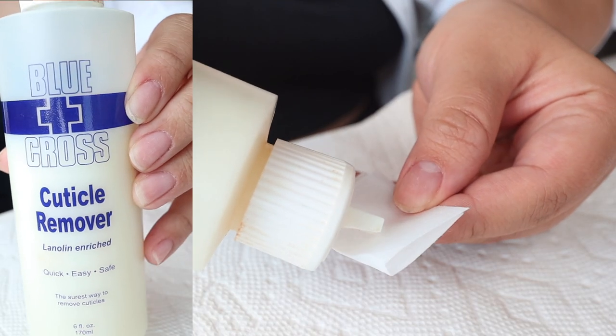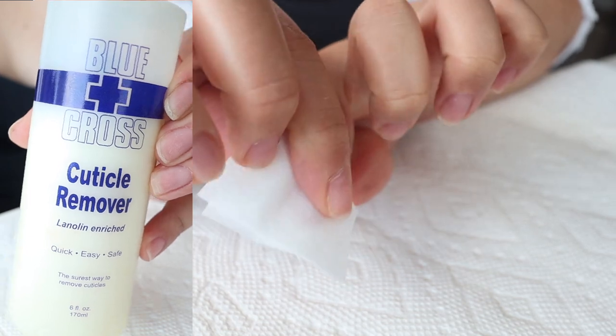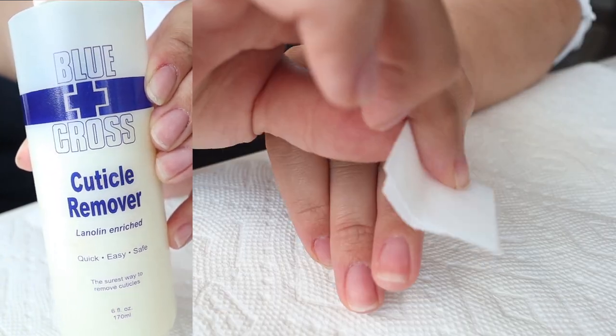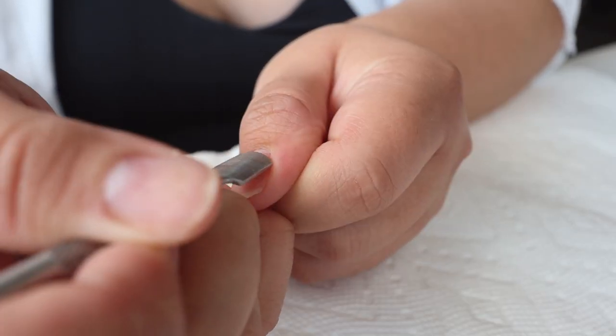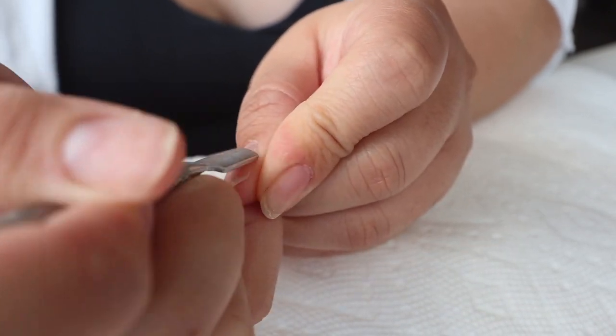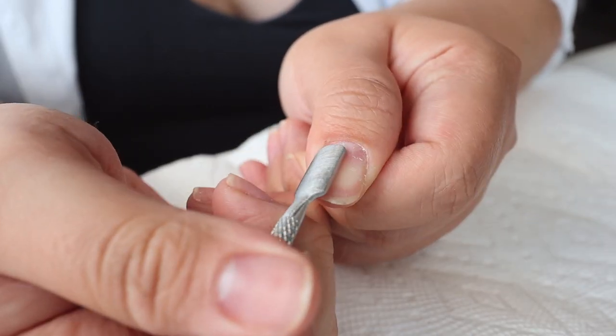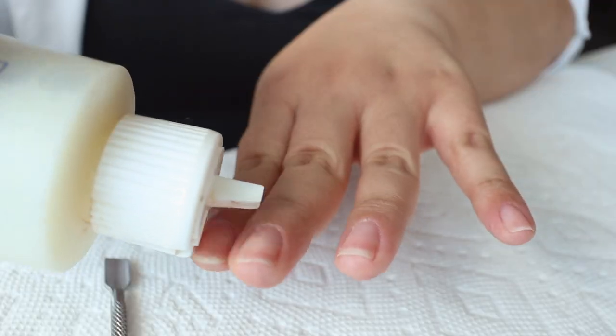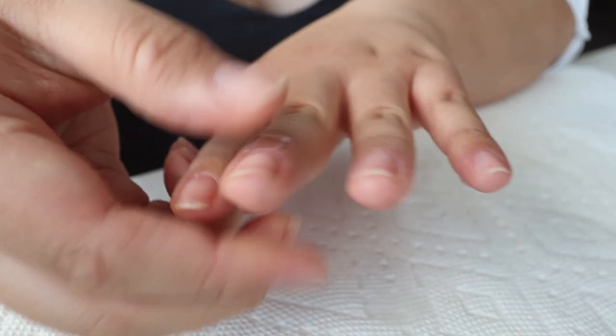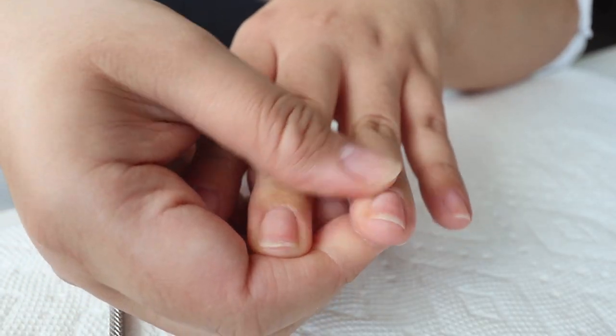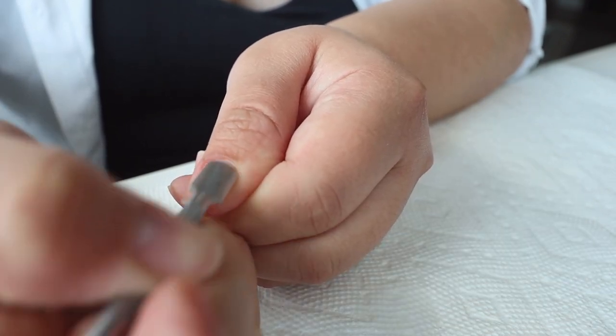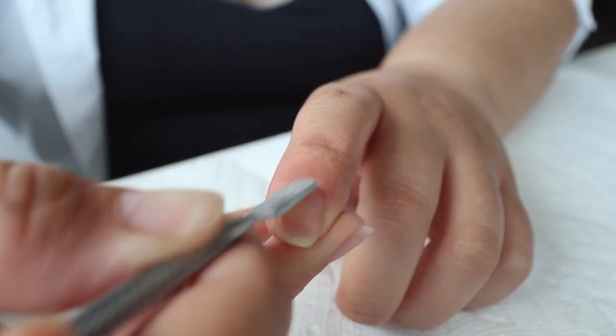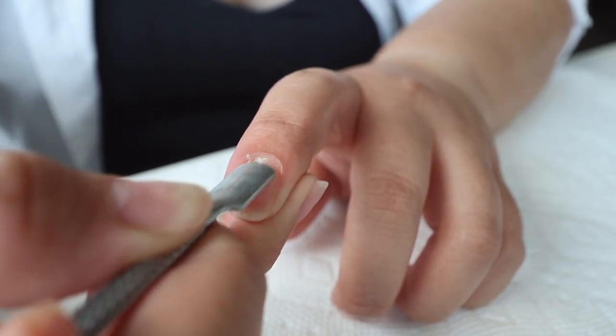Then I used this cuticle remover and applied it to my nails using the lint-free wipes from earlier. Then I gently pushed back my cuticles using this cuticle pusher that I got off of Amazon. Then I repeated the process two more times. This time I added the cuticle remover directly to my nails.